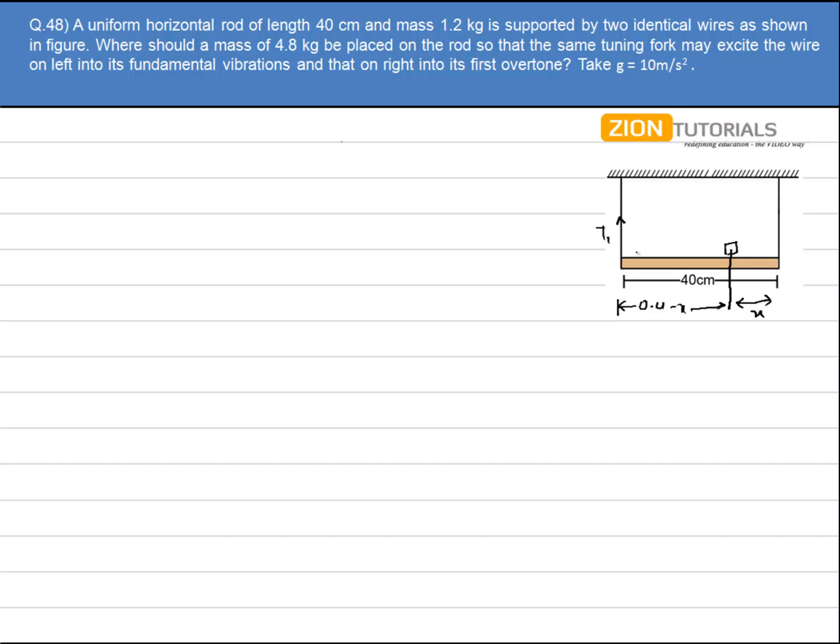Let's say tension in this string is t1 and in this one is t2. Now it is given that in the left hand side the frequency is fundamental and in the right hand side the frequency is first overtone.